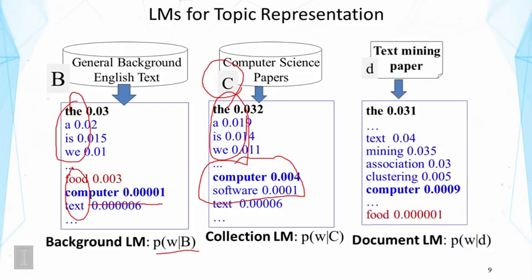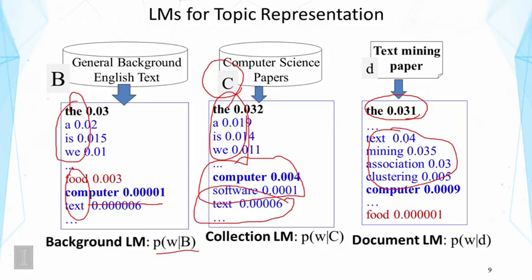We can look at even smaller text — for example, a text mining paper. Estimating the same way, we get another distribution where 'the' still appears on top, but soon we see 'text,' 'mining,' 'association,' 'clustering' with relatively high probabilities. In contrast, 'text' has a relatively small probability in the CS collection model. Based on different text data we can have different models, each capturing the topic. We call this a document language model versus a collection language model, and later we'll see how they are used in retrieval functions.